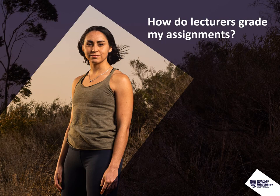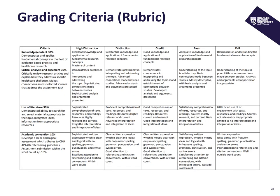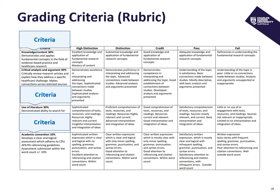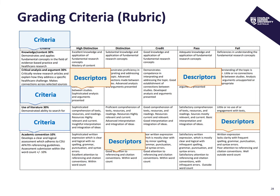Here's an example of a grading criteria or rubrics, possibly for an essay or research task. There are criteria: knowledge and content, critical analysis, use of literature, and academic convention at the bottom, weighted at 10%. Then there are descriptors for each, telling you the difference between high distinctions, distinctions, credits, and a fail. These are what lecturers use to guide them in assessing your work. So it's really important to find those rubrics, read them, and get your head around them.